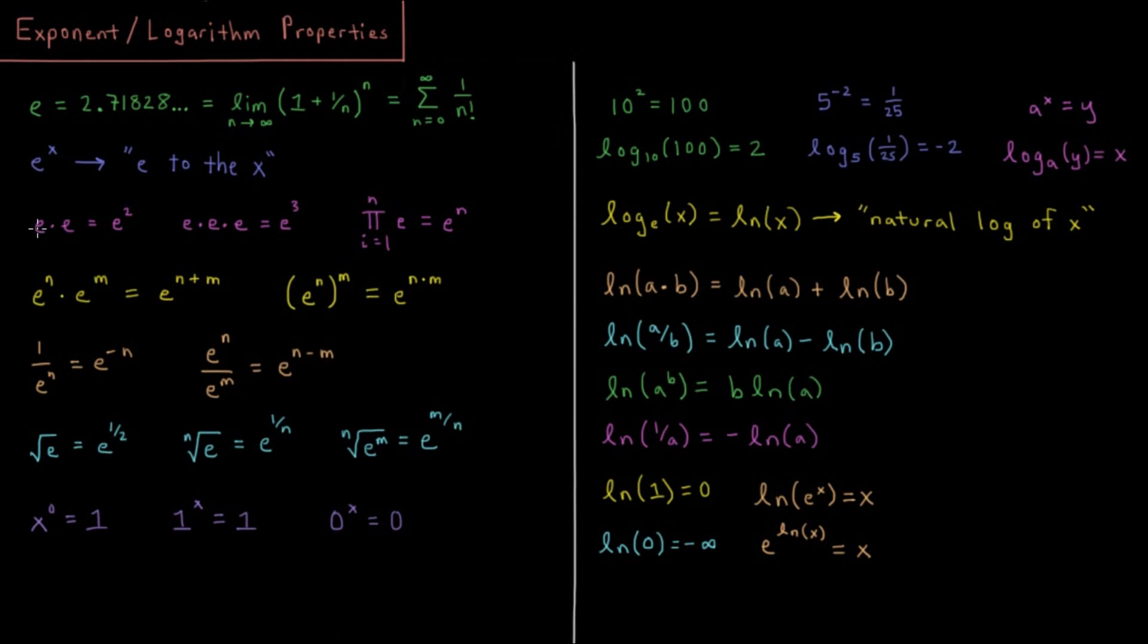So remind ourselves what exponents are. If we have E times E, that's equal to E squared. Multiply a number by itself, that's squaring it. Multiply a number by itself three times, that's E cubed, E times E times E. And E to the n is multiplying a number times itself n times. Something I might indicate by this symbol Pi, which is the multiplication analog of the sum symbol capital sigma.